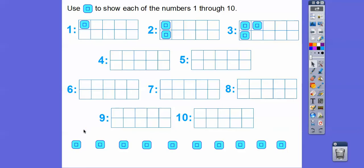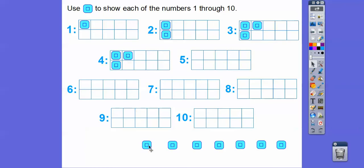Let's go ahead and do 4 right here, and we'll do them in pairs. Here's 1, and then another one right below it — so there's a pair right there, 1 pair. So there's 2 blocks, here's 3 blocks, and then 4 blocks. So 4 blocks gives us 2 pairs. Can you see the 2 pairs right here? 1 pair and 2 pair right there.